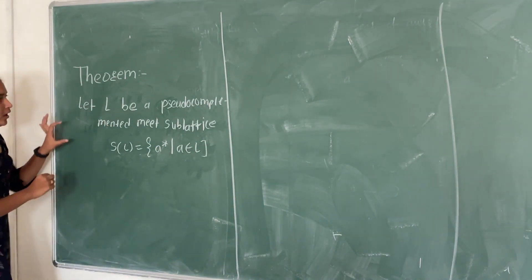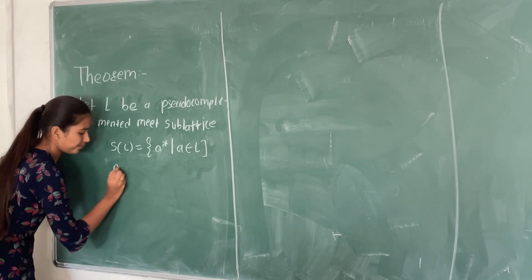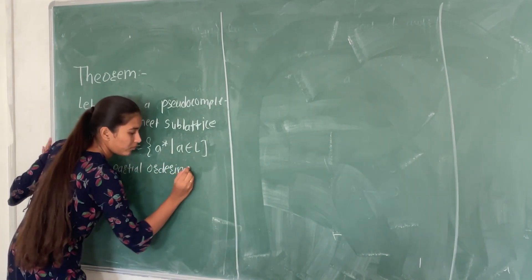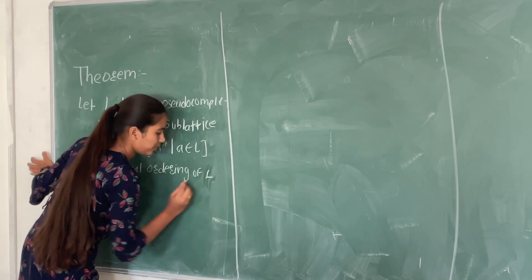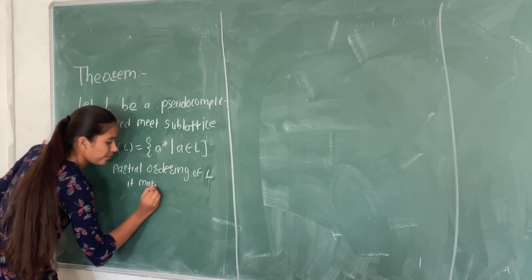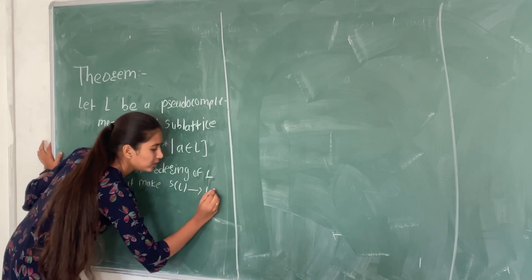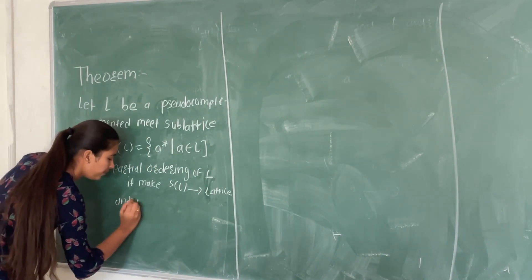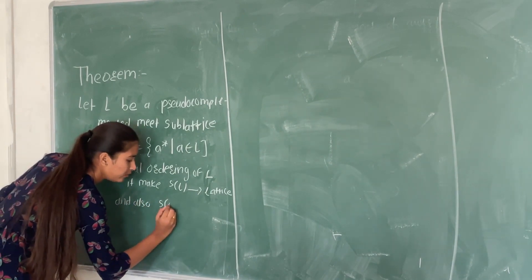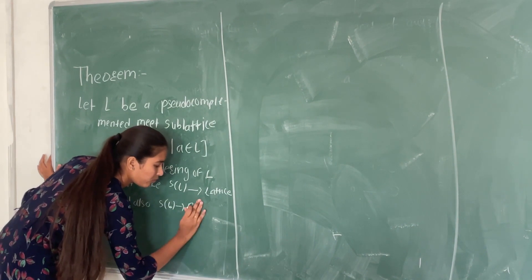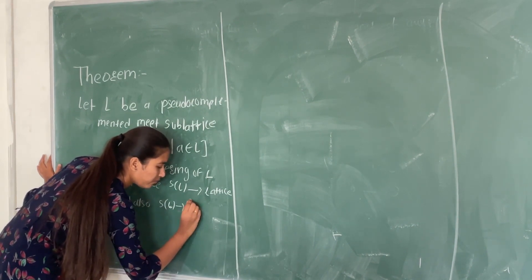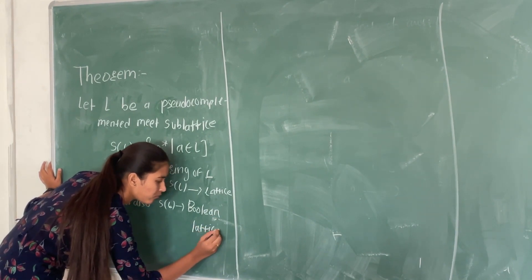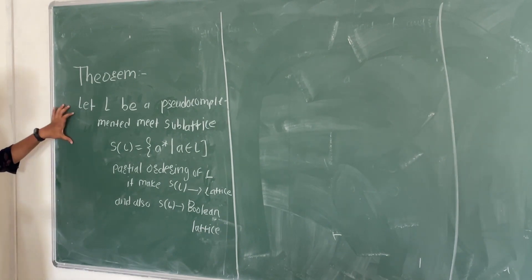Then, if we take partial ordering of L, it makes SL a lattice, and also SL a Boolean lattice. So, first we understand the statement of the theorem.